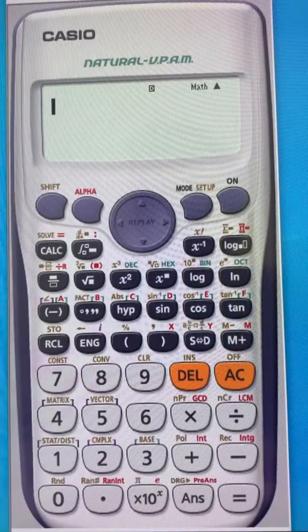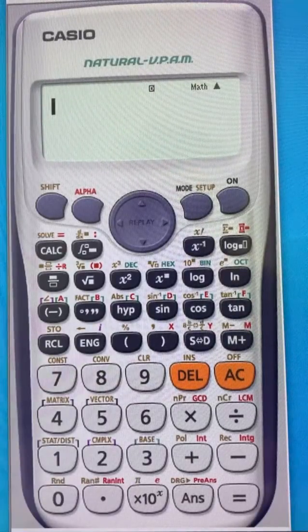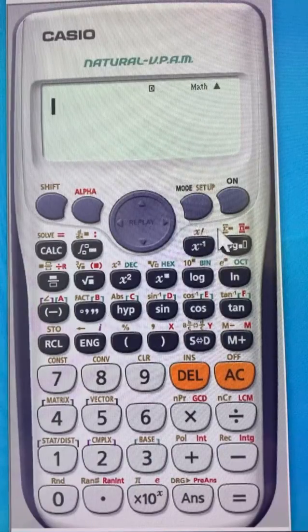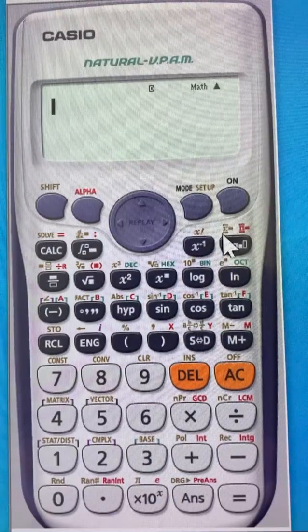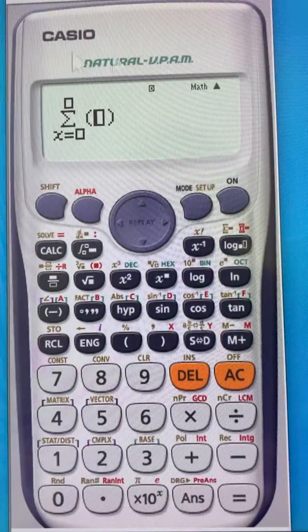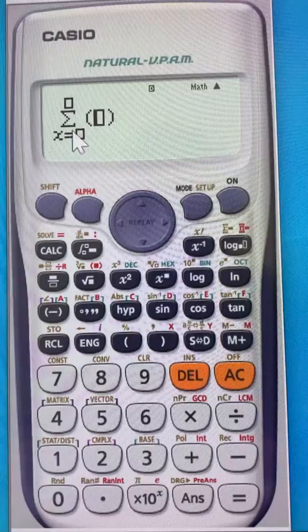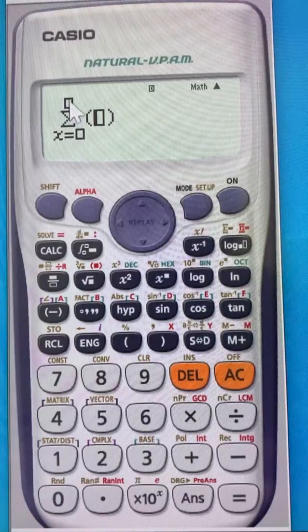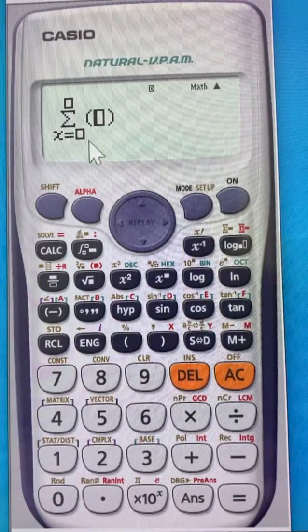I want to show you how to enter this into your Casio calculator. First thing is you want to use the summation notation. So shift and then press this, you get this sum from X equal the lower value to the upper value, but leave these until the end.